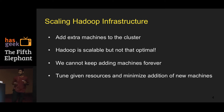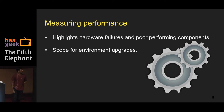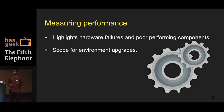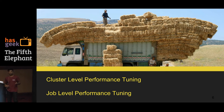You cannot keep throwing machines at performance forever — adding machines is a huge investment. Once we decide we cannot keep adding extra machines, we need to get the same performance by tuning the given resources. And once you decide on tuning, you need to start measuring performance. Measuring performance highlights hardware failures, poor performing components, and gives scope to upgrade — whether the version of Hadoop, the disks, or the CPUs.